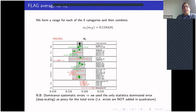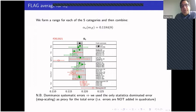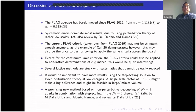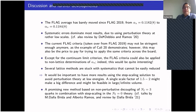Rather than adding errors in quadrature — since errors are mostly systematic — FLAG used the step-scaling result (alpha 17), which is statistics-dominated, as a proxy for the total error. The outcome shows almost no change from FLAG 2019, moving by about a quarter of a sigma. Systematic errors are dominated by perturbation theory at low scales. A nice review by Del Debbio and Ramos from a couple of years ago systematically analyzes these effects by varying the scale.